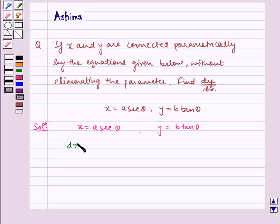Now, dx by d theta is equal to a sec theta tan theta and dy by d theta is equal to b sec squared theta.